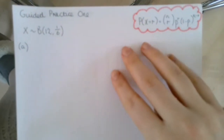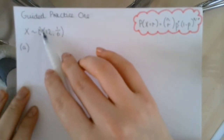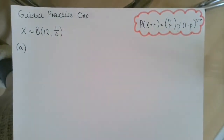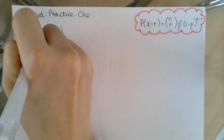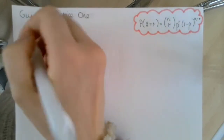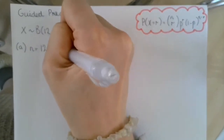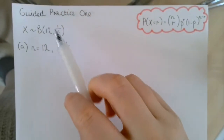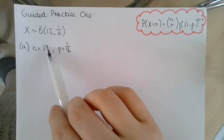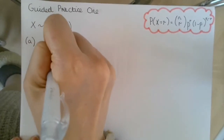In the first example, we're given that a random variable X has the binomial distribution where n equals 12 and p equals 1/6. That first number in the binomial bracket is equal to n, and then the second number is our parameter. n is called our index and p is our parameter — just making a note of those key words.